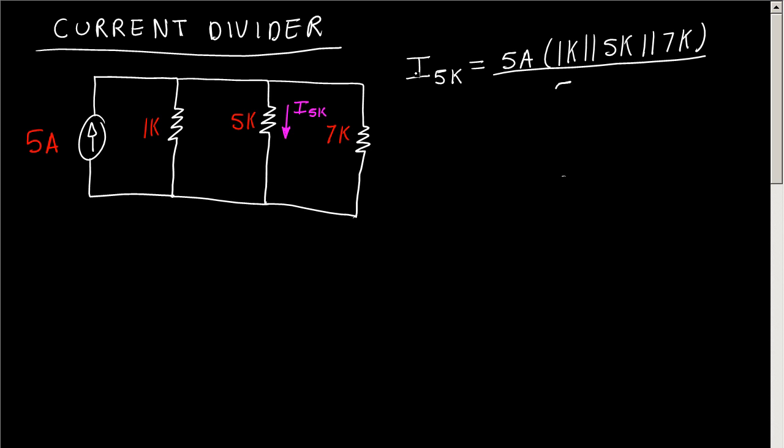divide it by the resistance where you want to find the current. So our final answer is going to be 0.744 amps.